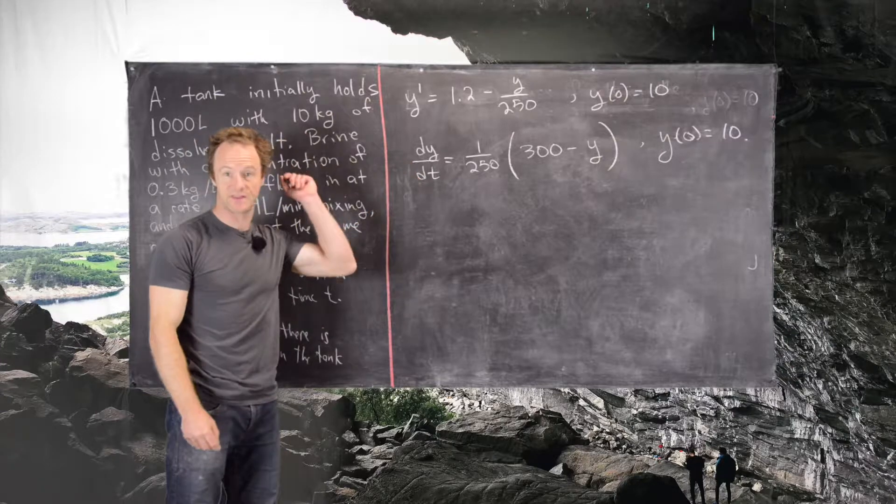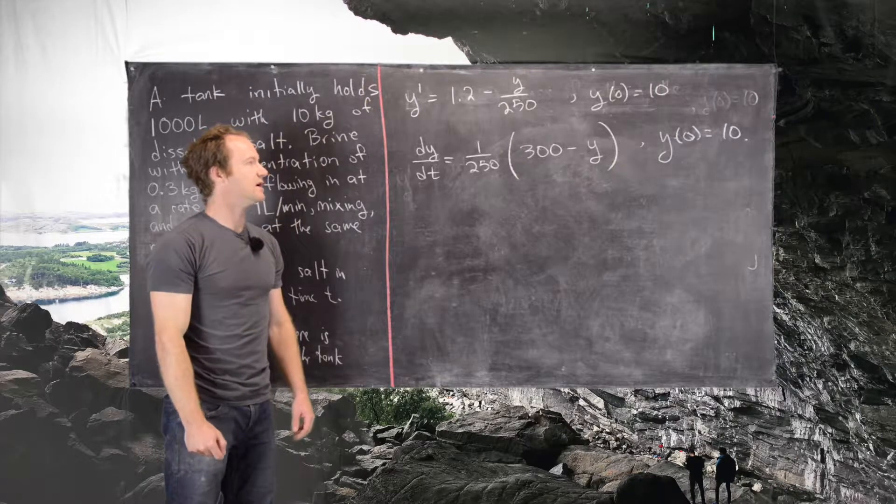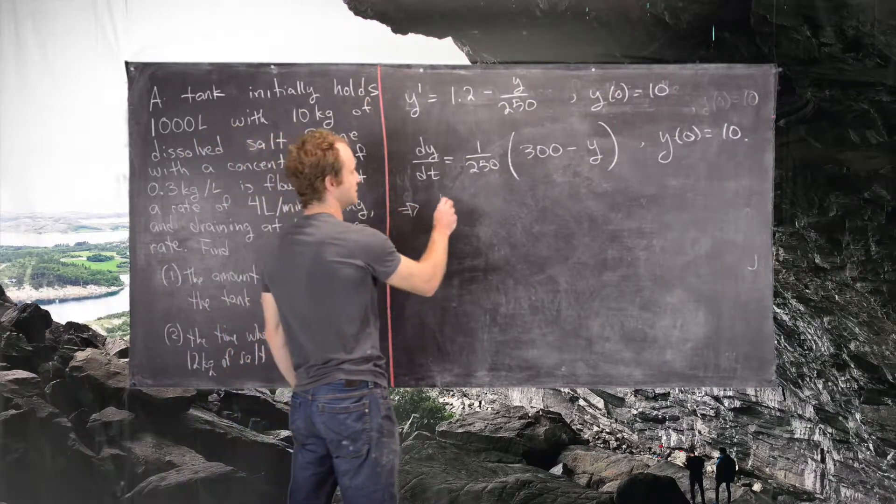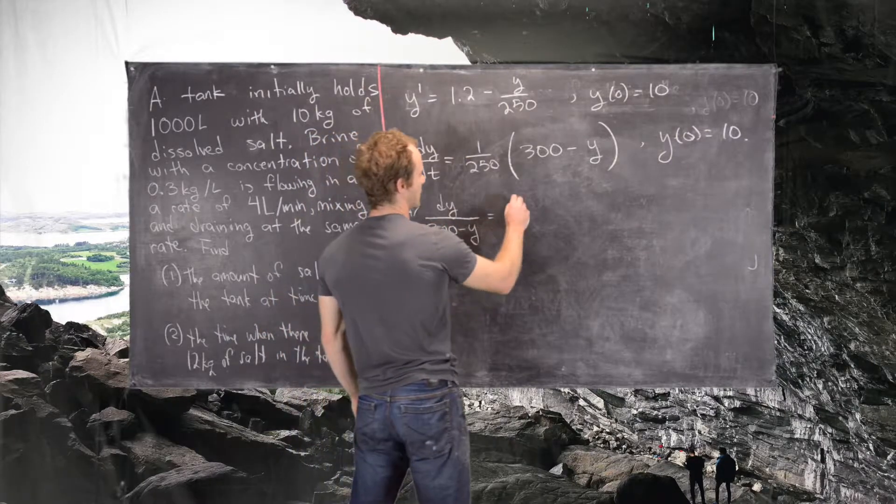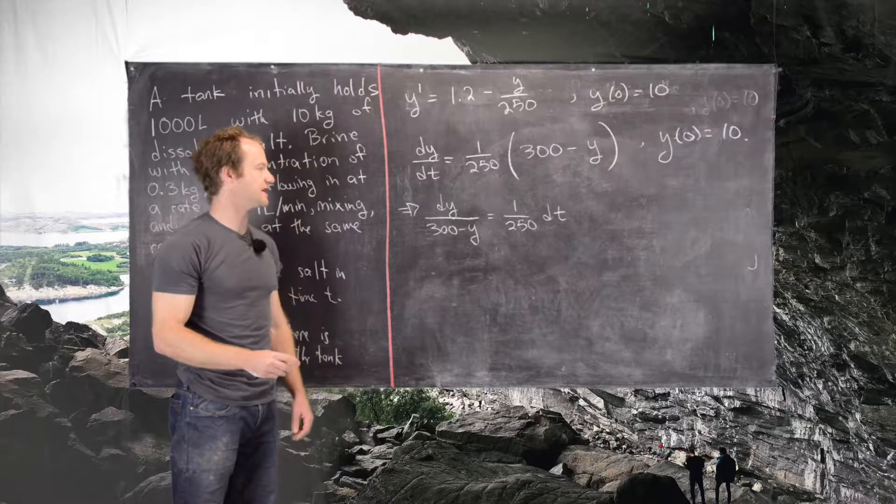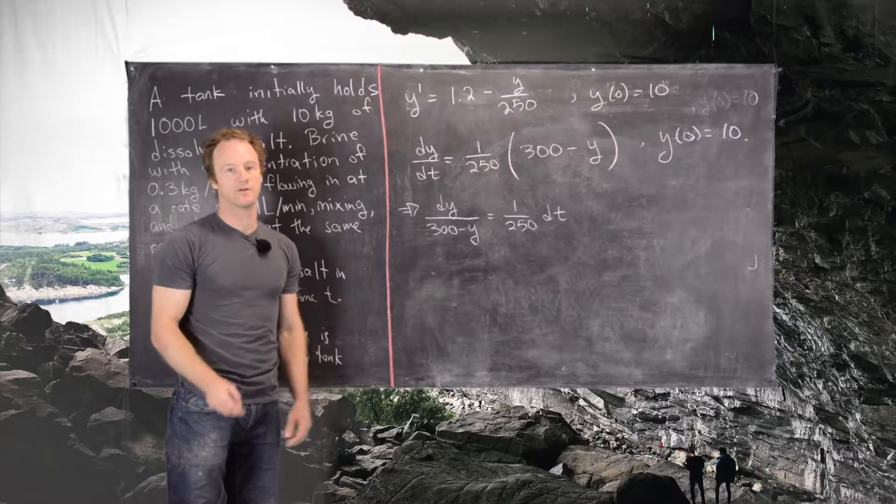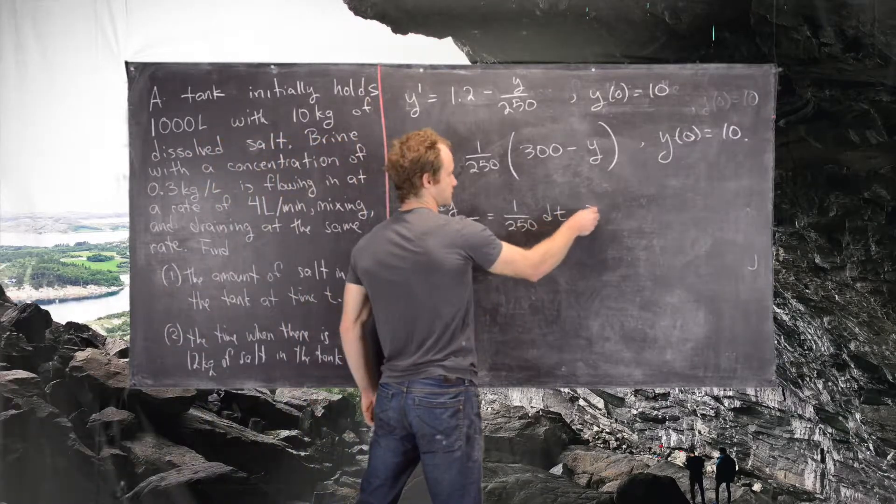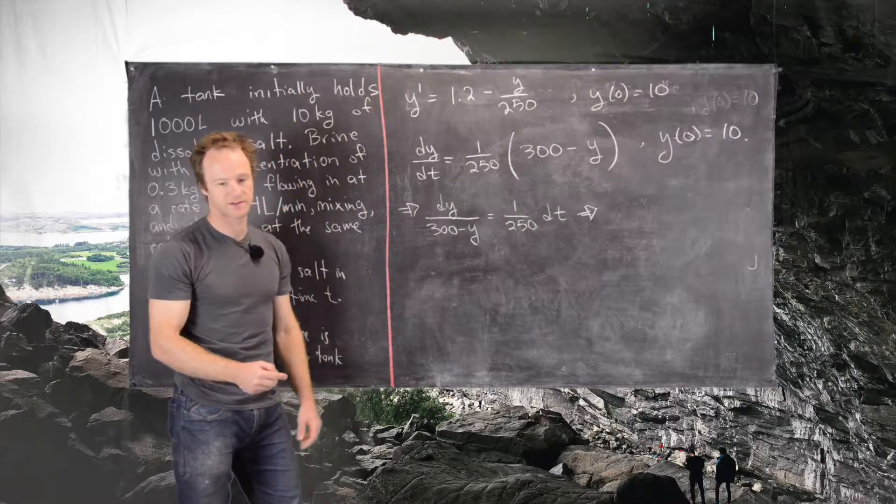We can notice that this is a separable differential equation. In fact, it's an autonomous differential equation, given that it only depends on the dependent variable. But we can use separation of variables to solve this. This will give us dy over 300 minus y equals 1 over 250 dt. The next thing we would do is take the antiderivative of both sides with respect to the given variable.